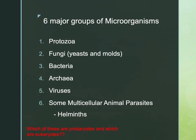Now we're on to the six major groups of microorganisms. Remember this list — and if you Google it, you might see it represented different ways, but this is how we're representing it in this class. All of these are going to be microorganisms, so they're all microscopic. We have protozoa, fungi (that's going to include our yeasts and molds), bacteria, archaea, viruses, and then some animal parasites called helminths. Take a moment here and think through each one — which of these are prokaryotes and which are eukaryotes?